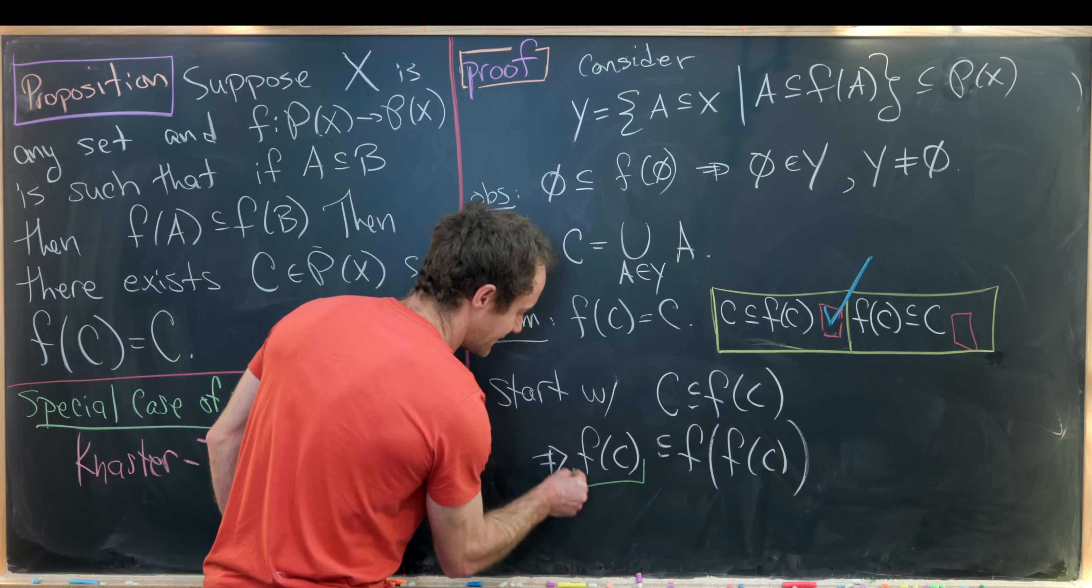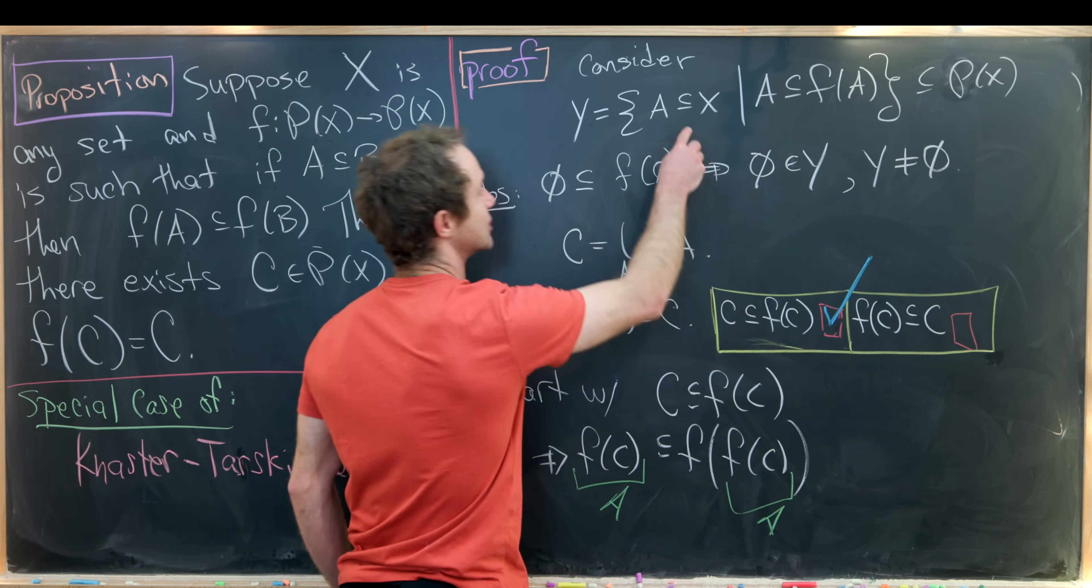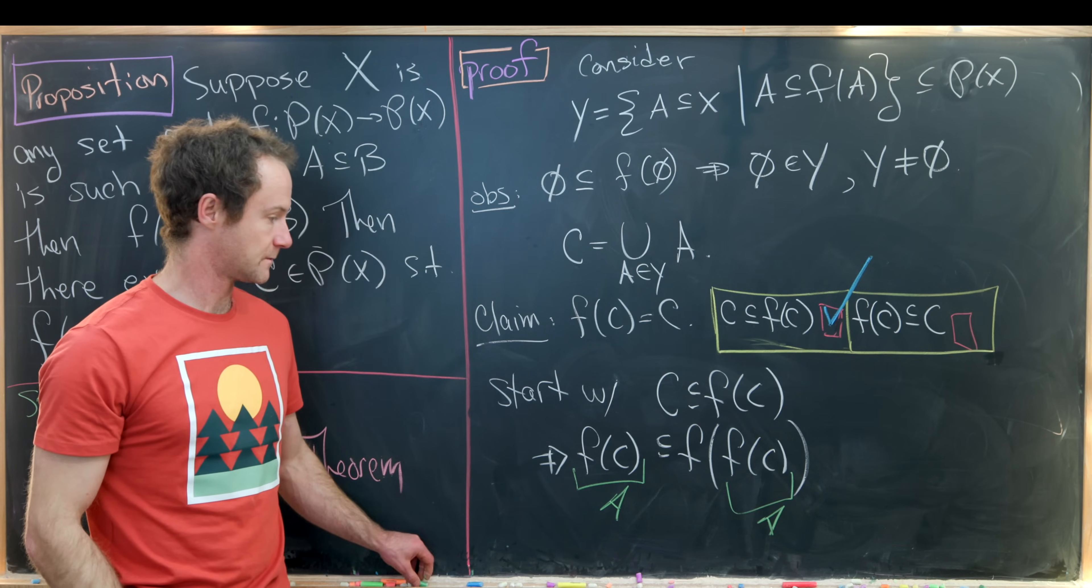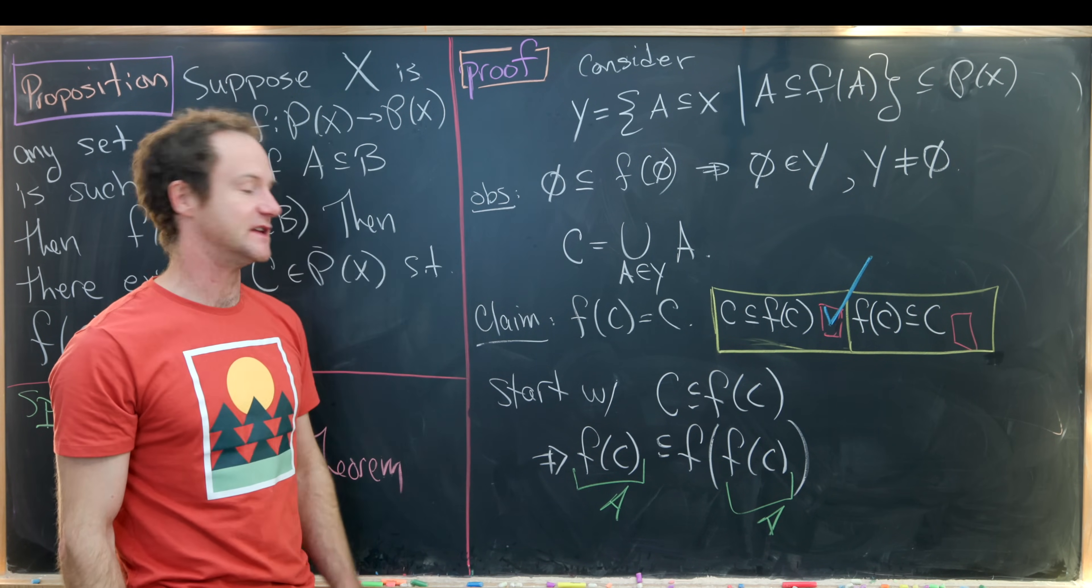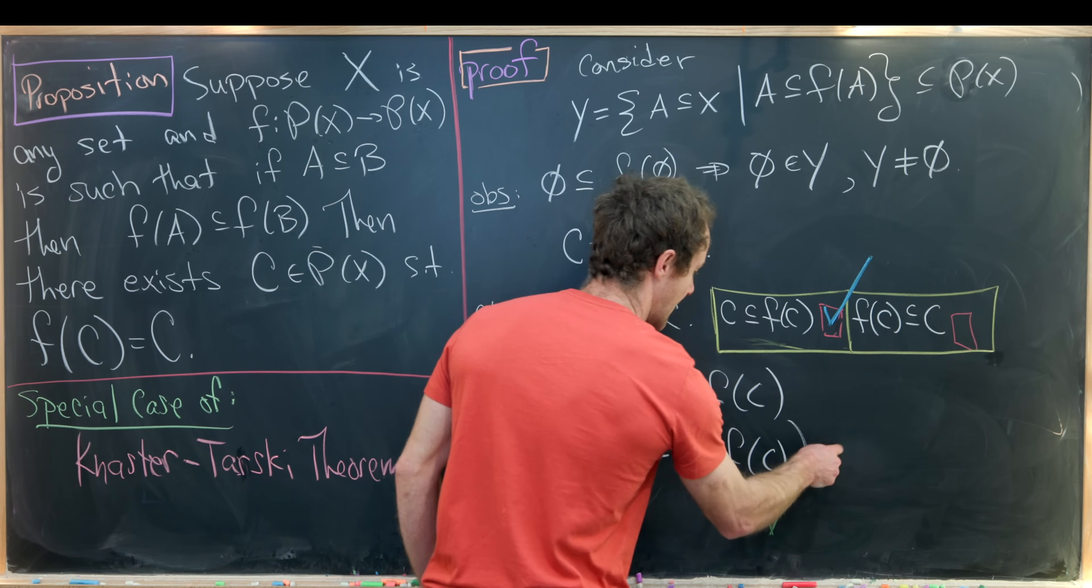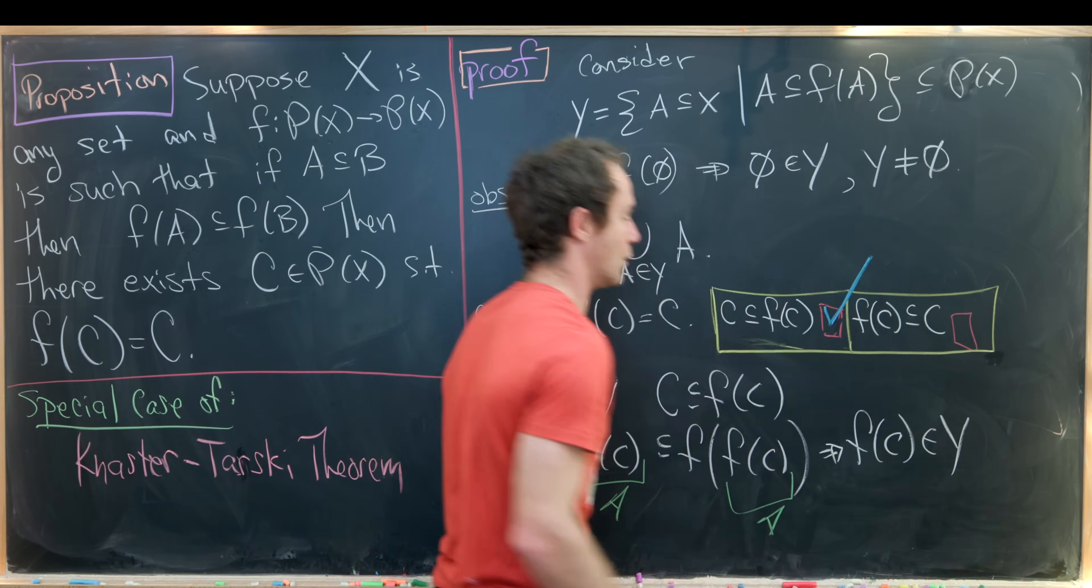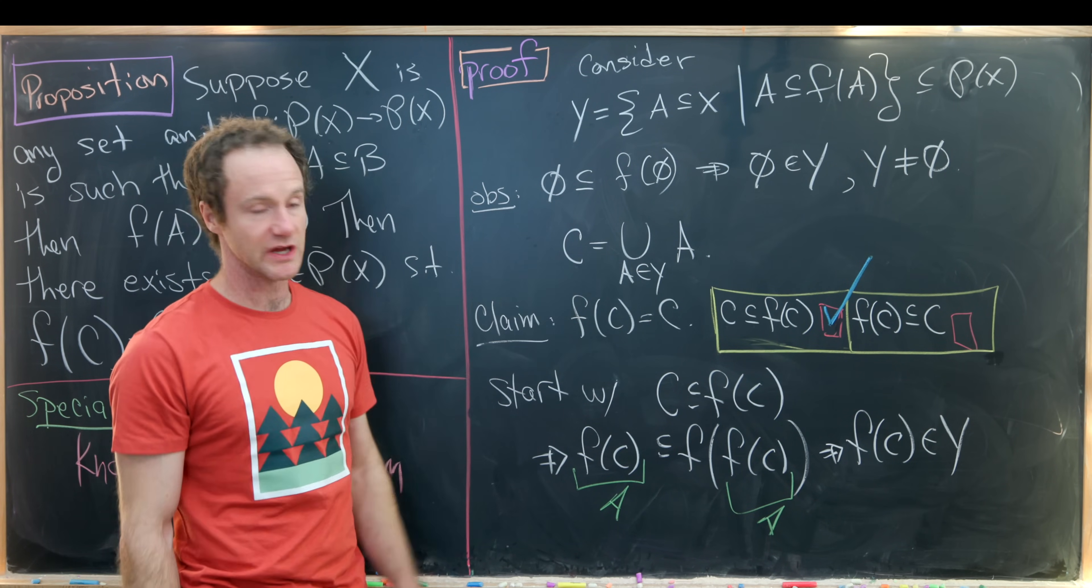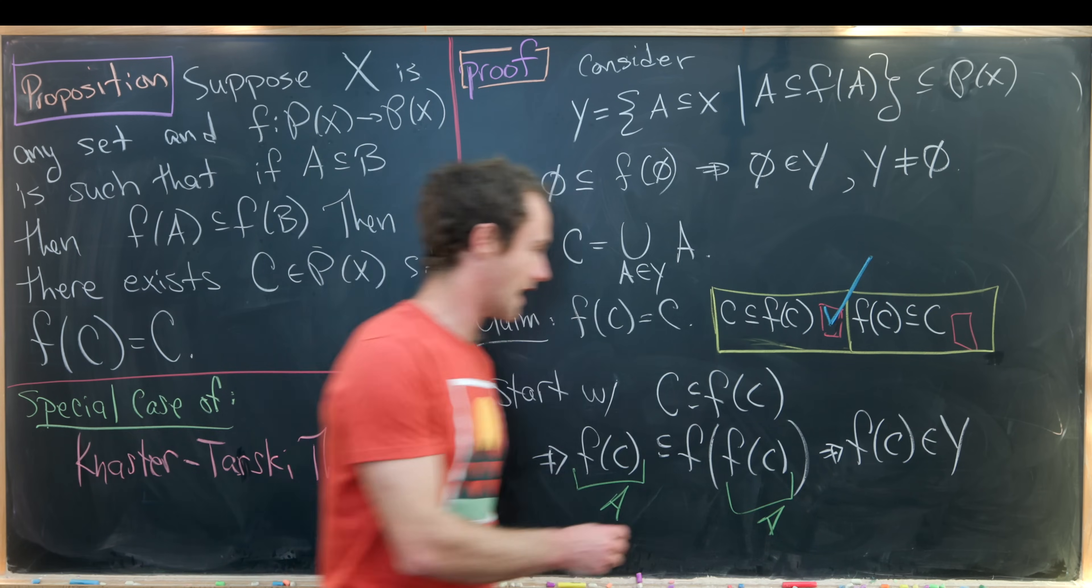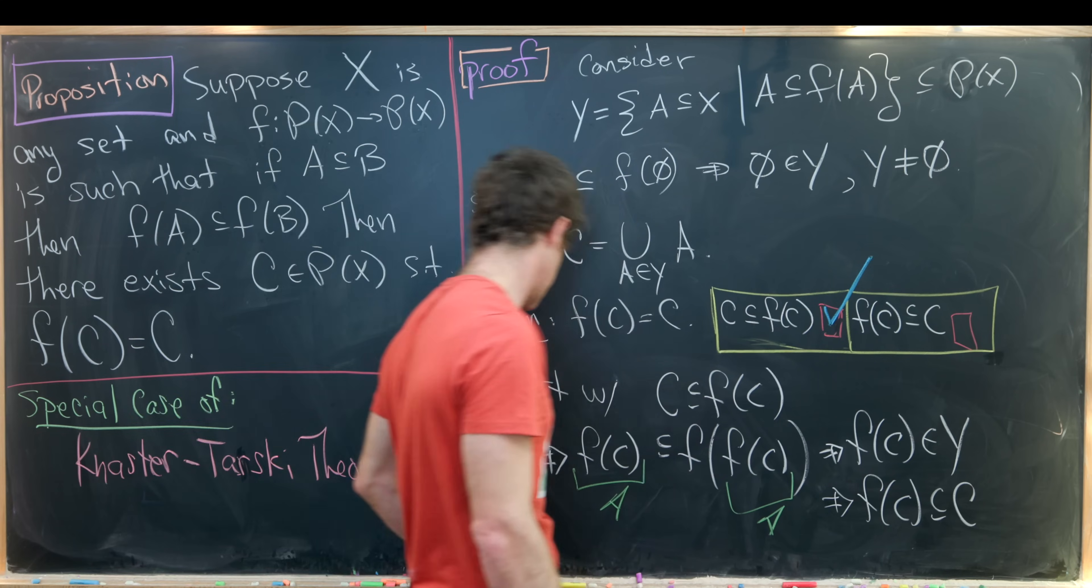If we think about this f of c as playing the role of a in this definition of y up here, we see that f of c satisfies the entry fee to being inside of y. So that means that f of c is an element from y. But then let's recall that c is the union of all elements from y. So indeed f of c is a subset of c.